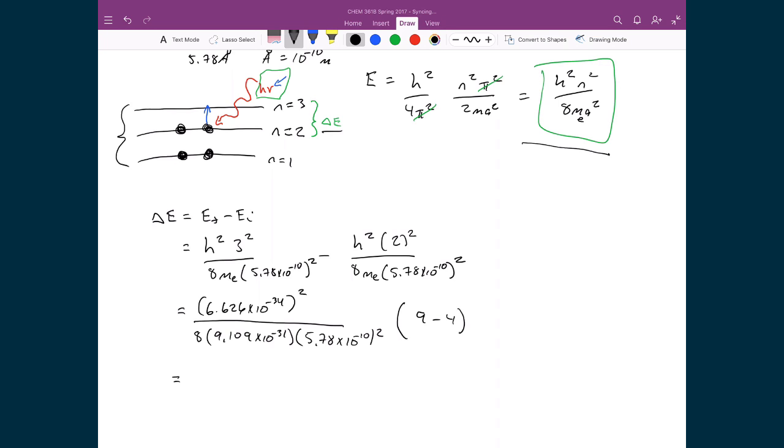And when I plug all these numbers into my calculator, the number that you will get, the energy of the photon that's required to promote that electron, 9.02 times 10 to the minus 19 joules.